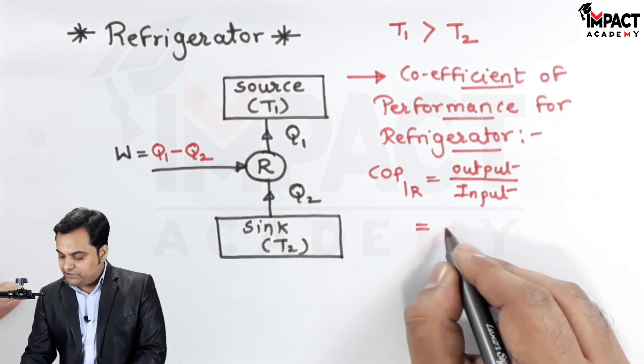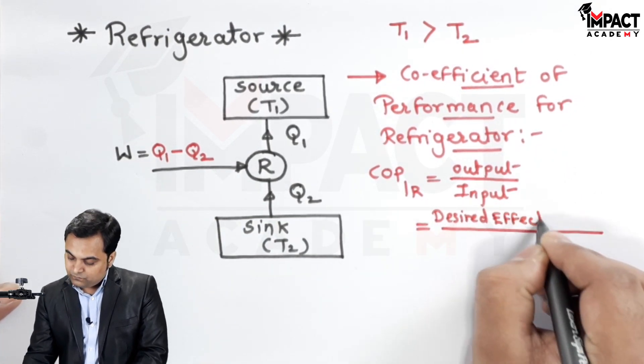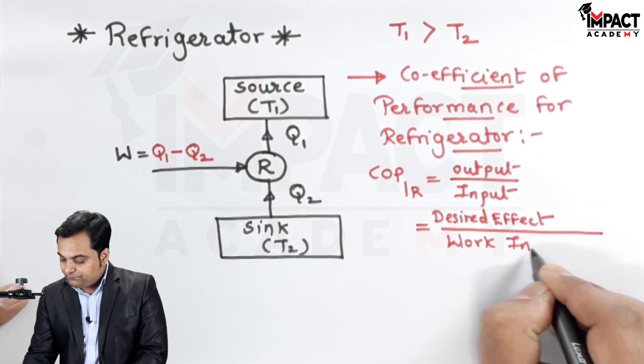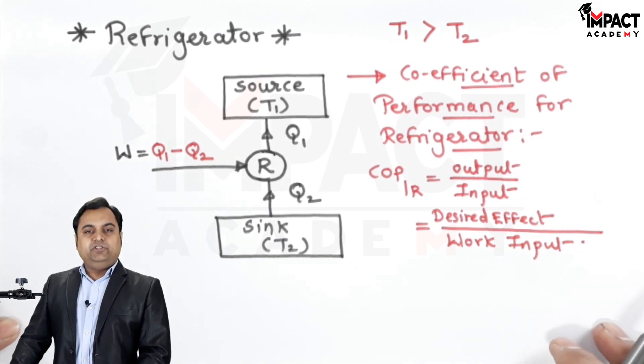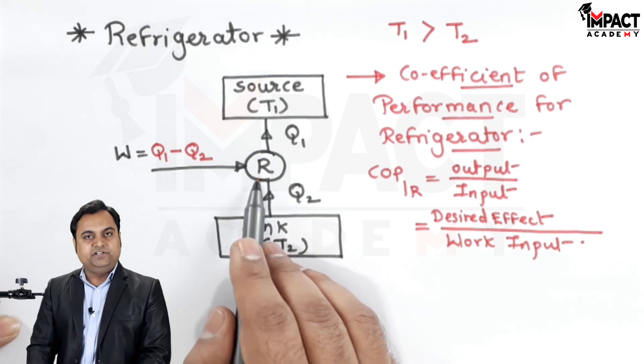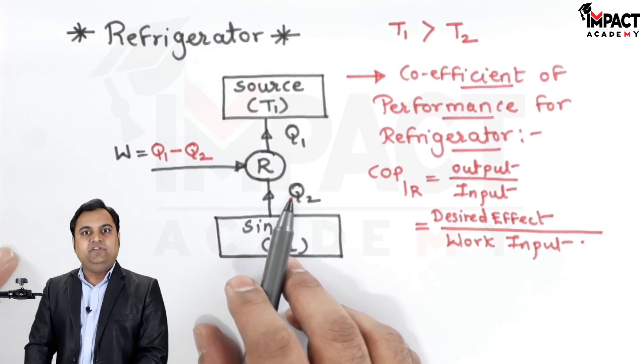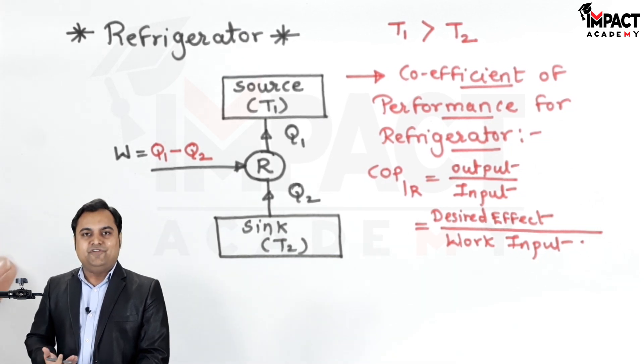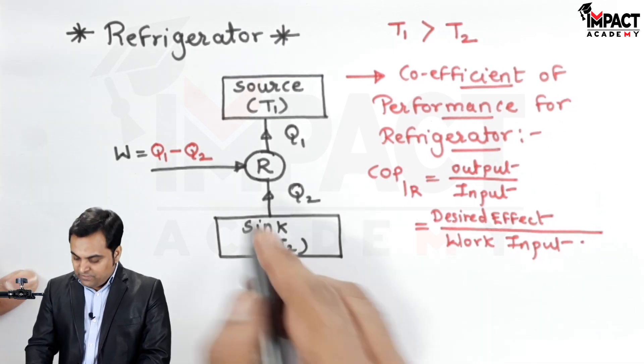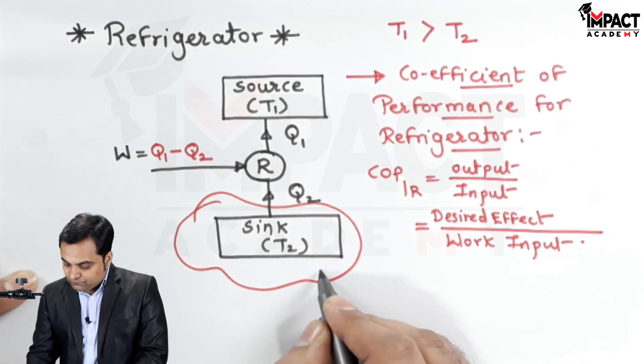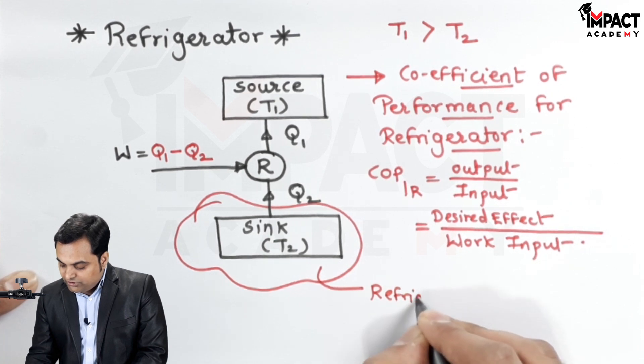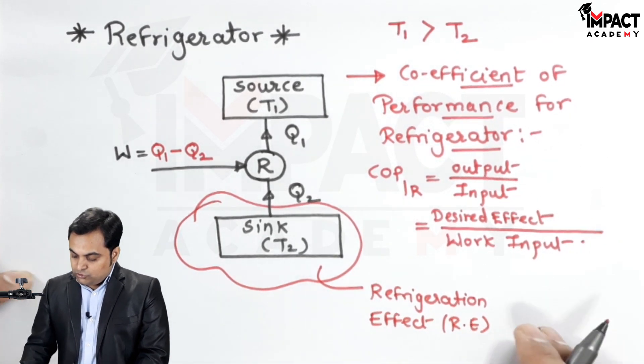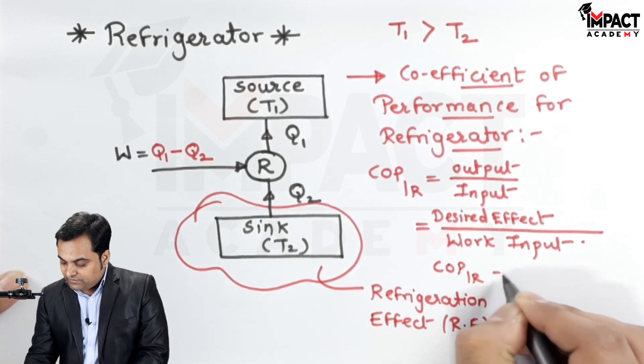In case of refrigerator, the output is the desired effect which is also called as the refrigeration effect, and the input is the work input. Whenever we have source and sink and there is a refrigerator maintaining a continuously low temperature, we have to imagine that we are into the sink. We are going to feel the refrigeration effect when we are into the low temperature reservoir. This low temperature reservoir would be observing the desired effect denoted by RE. So basically the COP of the refrigerator is refrigeration effect upon W.